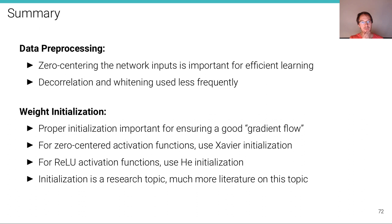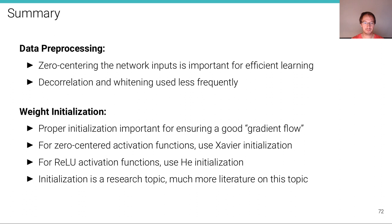In summary, data preprocessing and weight initialization are both important. For data preprocessing, zero-centering is important for efficient learning, while decorrelation and whitening are used less frequently. Regarding weight initialization, proper initialization is critical for ensuring good gradient flow — ensuring gradients reach all parameters. For zero-centered activation functions, use Xavier initialization (variance = 1/d_in). For ReLU, use He initialization (variance = 2/d_in). Initialization is an active research topic with much more literature beyond what this lecture covers.